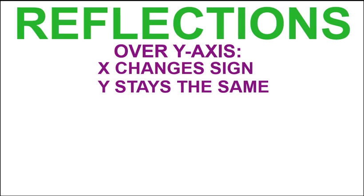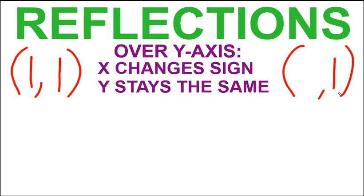If we reflect over the y-axis, x changes signs and the y value stays the same. So for instance, if we have the point (1,1), when we reflect over the y-axis our y value is going to stay the same, it'll stay 1. The x value will change signs.